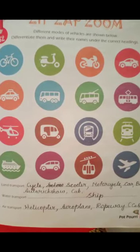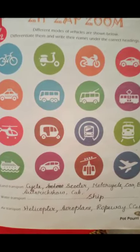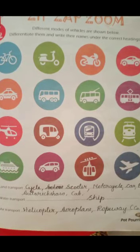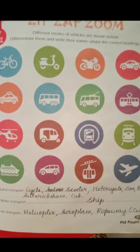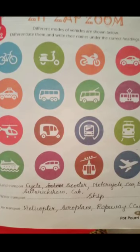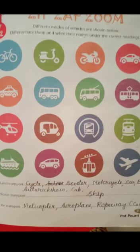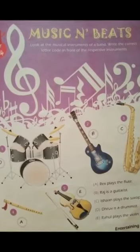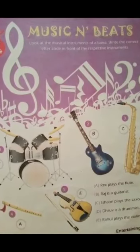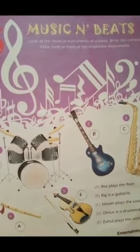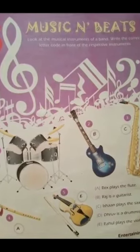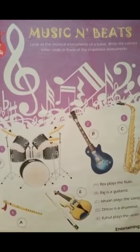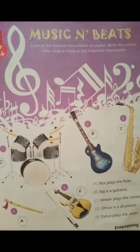Today we are going to learn three chapters from our GK text. They are Chapter 32, Sip Sap Zoom; Chapter 34, Music and Beats; and Chapter 35, Movie Stars.